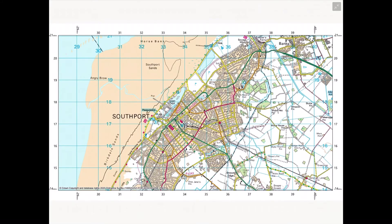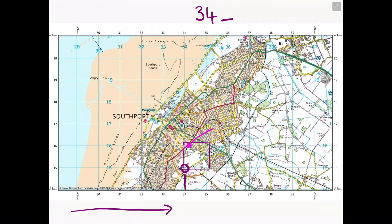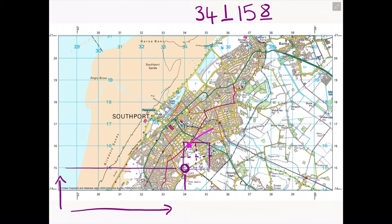We're going to have one more go on this OS map, this time locating a church. We find the grid square it's located in, find our bottom-left-hand corner, go along the corridor and find the line linking to our best friend. We split the grid square in half — that imaginary line indicates five — and estimate how many steps it takes to reach the church. Then we go up the stairs, find the line linking to our best friend, split the grid square in half again and estimate the steps up to reach the church. The six-figure grid reference is 341158.